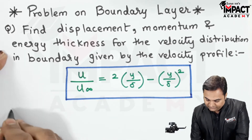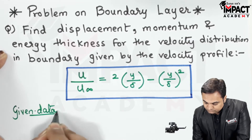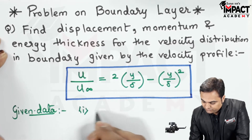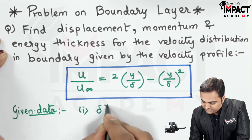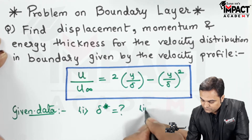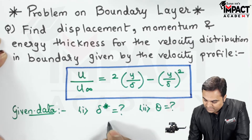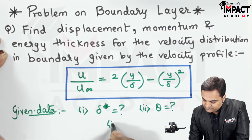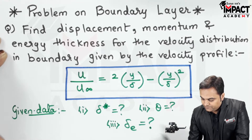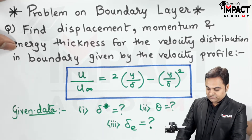We have to find: displacement thickness denoted by delta star, momentum thickness denoted by theta, and energy thickness denoted by delta suffix e. These are the three quantities to solve for.